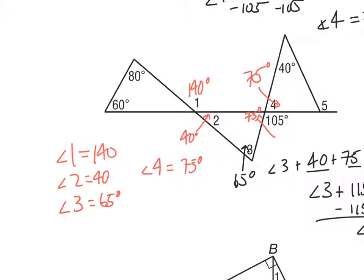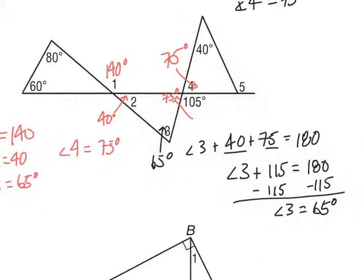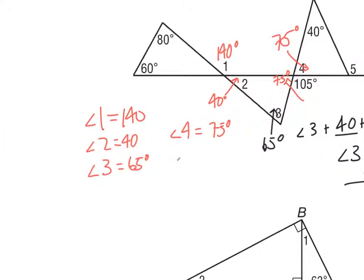Angle 3 is equal to 65 degrees. The last one to find is angle 5, which is an exterior angle to the triangle. Using the Exterior Angle Theorem, angle 5 equals the sum of the two non-adjacent interior angles, which is 75 plus 40, so angle 5 equals 115 degrees.